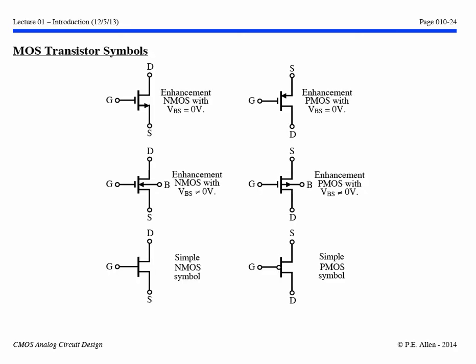On this slide we have symbols for MOS transistors. The first symbol shows an enhancement NMOS transistor with the bulk connected to the source, and over here the equivalent symbol for PMOS. If the bulk is not connected to the source, we can use a symbol showing terminal B representing the bulk or well of the transistor — for NMOS and PMOS respectively. Quite often, if the designer knows what is being used, simpler symbols might be used for NMOS and PMOS, depending upon preference and technology.